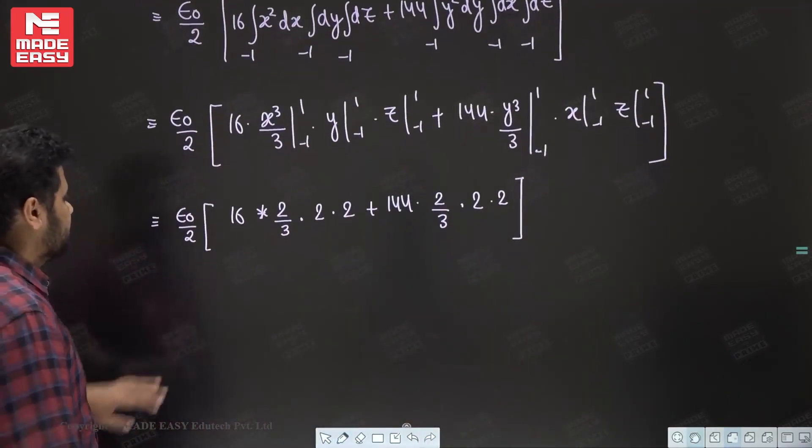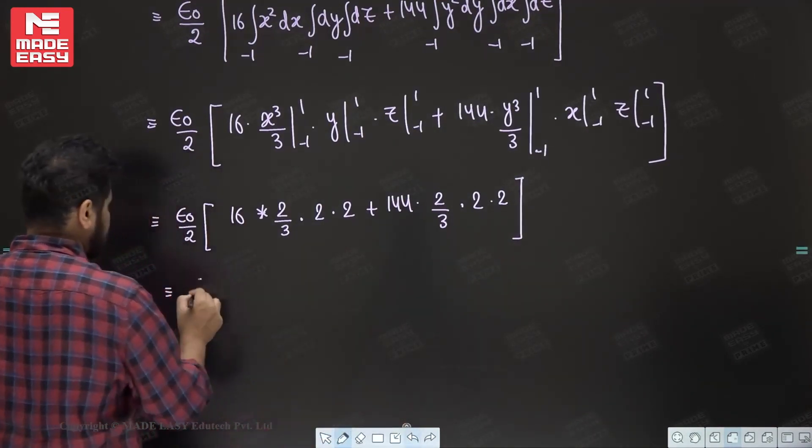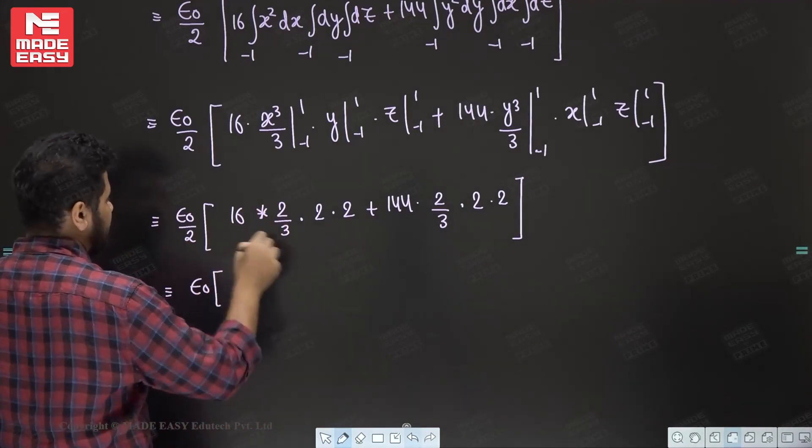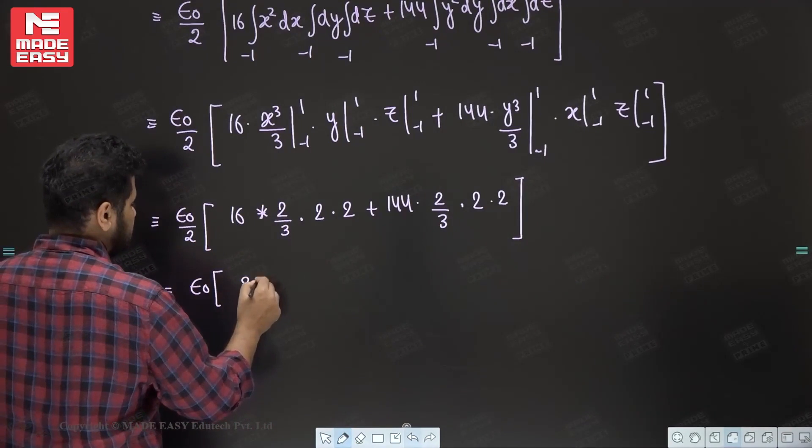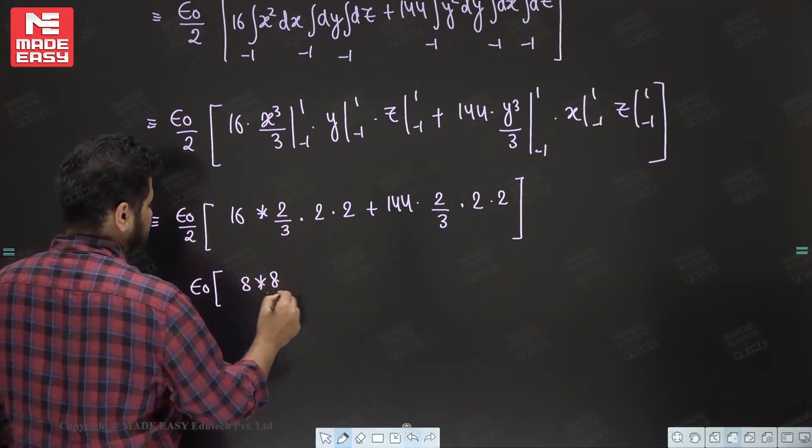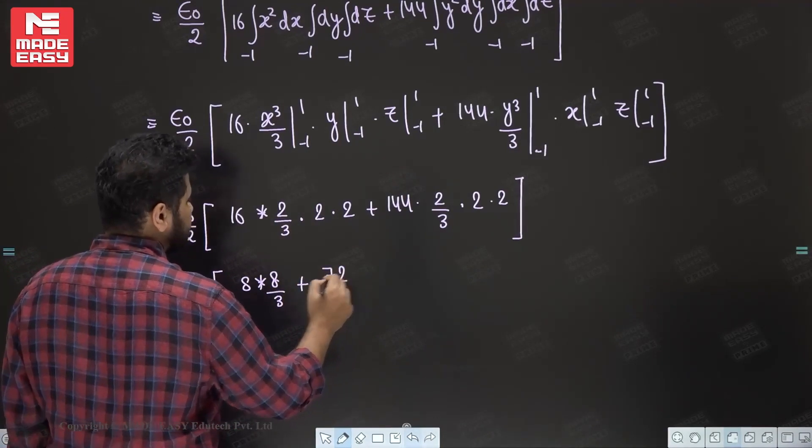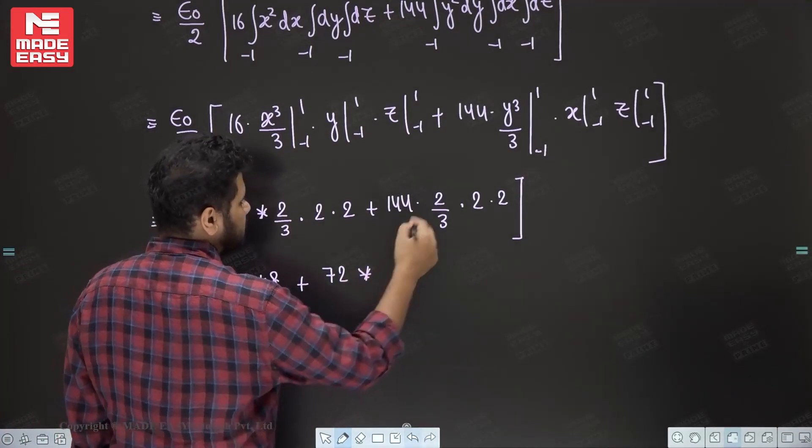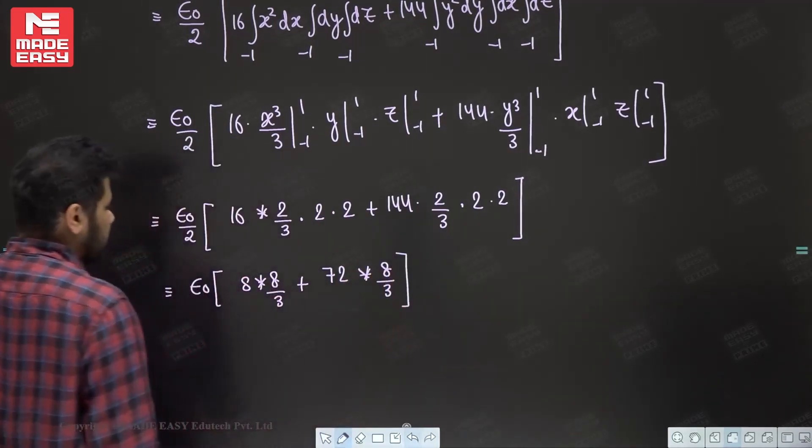Now we can put like this also epsilon naught. Just this is a simple calculation. We can divide everywhere by 8, so it will be 8 into 8 by 3 plus, this is your 72. So that means 72 into 8 by 3. So this is how much?